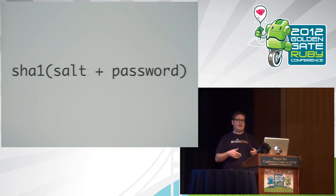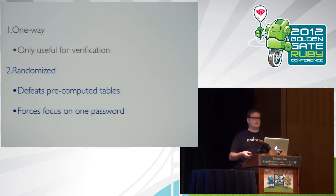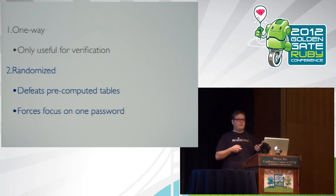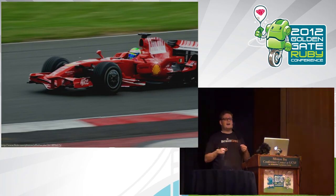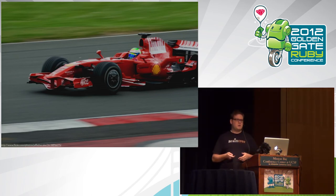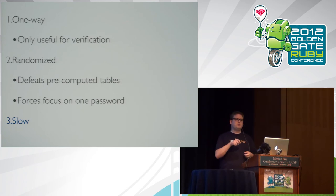Later, people started adding a salt — some random data appended to the password before hashing. This gives another useful property: it's randomized, so it defeats pre-computed tables and forces an attacker to brute force only one password at a time. This is what LinkedIn was doing and they thought they were safe. The problem is SHA-1 and similar hash functions are extremely fast — they're designed to be fast because they're used in things like SSL where you want pages to load quickly. A modern graphics card can actually calculate two billion SHA-1 outputs per second.